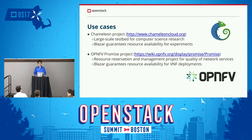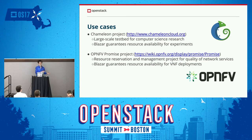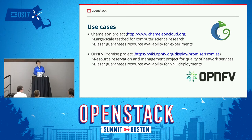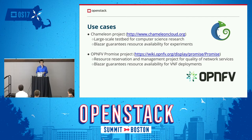The current use cases for the Blazar project are these. The first one is the Chameleon project — they are using Blazar in their production environment. Chameleon is a large-scale testbed for computer science research, and Blazar guarantees resource availability for experiments. The second use case is the OPNFV Promise project, which is a resource reservation and management project for quality of network service, where Blazar guarantees resource availability for VNF deployment.